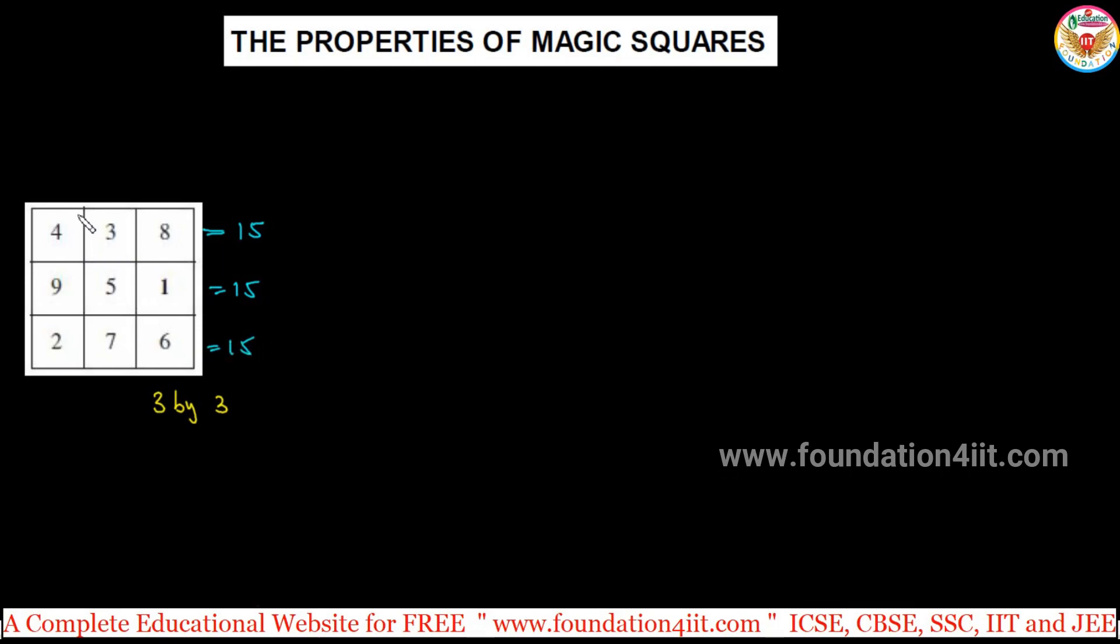Every row is 15 and every column, sum of the numbers in the column. 15, 3, 5, 8 plus 7, 15 and 15. Even diagonals, 4 plus 5 plus 6 equals 15. 8 plus 5 plus 2 is 15.